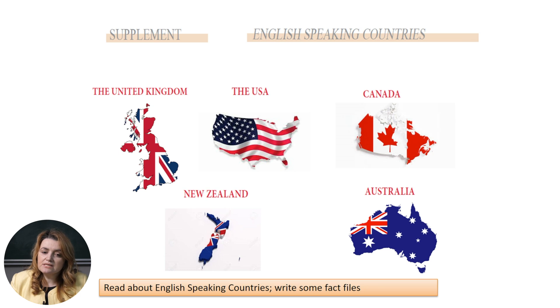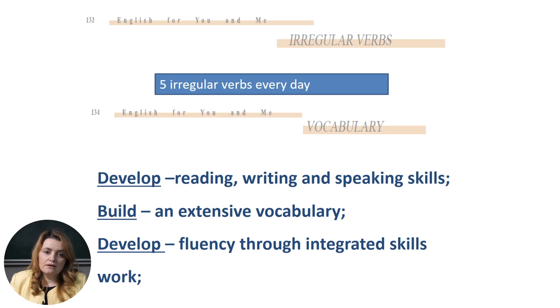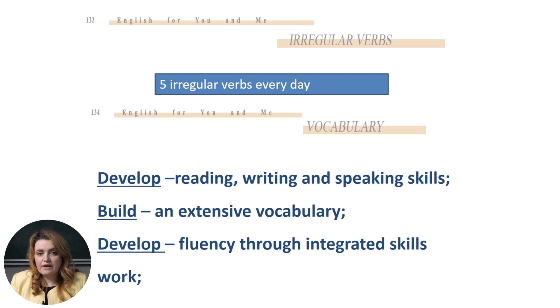We're still in the supplement section, but now there's a section on English-speaking countries. I want you to read about them — you can write fact files, put them into projects, or add information to your portfolios. Try to read as much as possible every day. Another piece of advice: practice irregular verbs, which you can find on page 132 of the same textbook — take five irregular verbs each day and practice them. When building vocabulary, it's important to develop reading, writing, and speaking skills, build an extensive vocabulary, and develop fluency through integrated skills work.